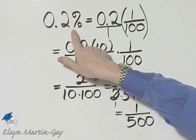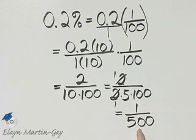This original percent, written as a fraction in simplest form, is 1 over 500.